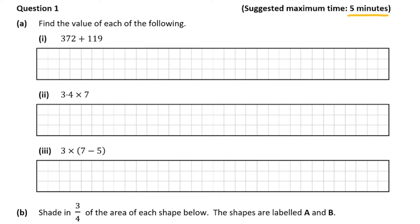If you get stuck on one, move on and come back to it at the end. So looking at part a, part one, we have a bit of calculator work here. We're being asked to figure out what 372 plus 119 is.